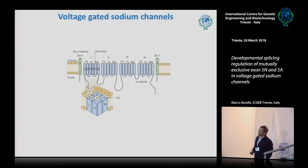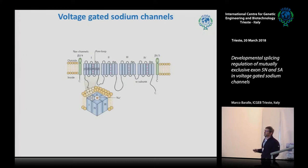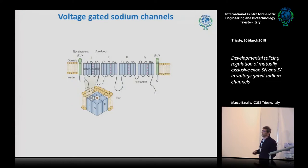Voltage-gated sodium channels are responsible for electrical signals and the rapid depolarization of the cell. The core structure consists of beta subunits — up to four of these — which give the localization of the channel in the membrane. The workhorse is the alpha subunit, consisting of four transmembrane domains each with six regions. Segment 4 is the voltage sensor — it's highly charged, and when the membrane is depolarized it undergoes a conformational change allowing sodium to enter the cell.